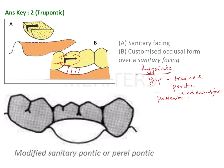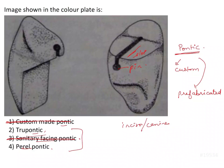The next option is barrel pontic, which is a modification of the sanitary or hygienic pontic. It has a dome-shaped or arc-shaped undersurface of the pontic to enhance hygiene and cleanliness maintenance. It is a custom-made pontic and is not indicated in anterior areas, so barrel pontic is also eliminated.